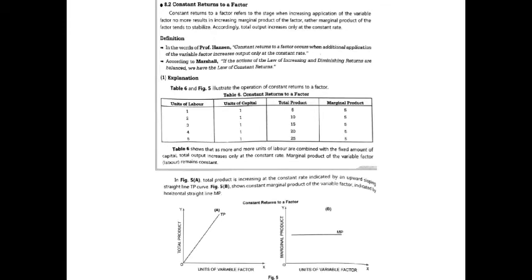Next is constant return to a factor. This refers to a stage when increasing application of the variable factor no longer results in an increasing marginal product — the marginal product of the factor tends to stabilize. Accordingly, total output increases only at a constant rate.